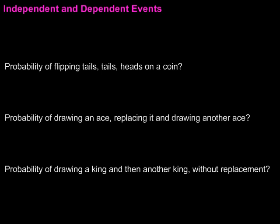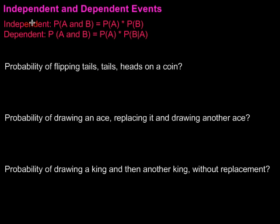So, the formula to find each of those, for an independent event, the probability of A and B happening, we just multiply the two probabilities.